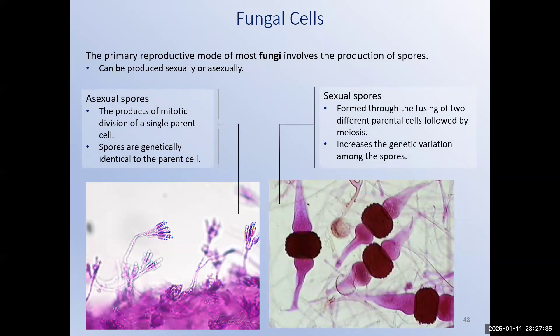Spores are produced sexually or asexually. In asexual spore formation, a single fungal cell copies its DNA and packages it into a spore, which is released and develops into a new fungal colony genetically identical to the parent. In sexual spore formation, two different fungal cells come together and mix their DNA. The spore created is unique from either cell that formed it, producing greater genetic diversity, which may give the new fungal cell a survival advantage in unfamiliar environments.